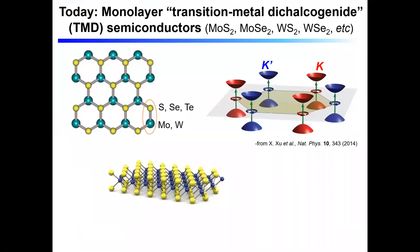This is not going to be a talk about graphene. This is a talk strictly about the TMD, or transition metal dichalcogenide semiconductors, that many of you in the room are very familiar with. These are materials like monolayer MoS2, MoSe2, tungsten diselenide, etc.